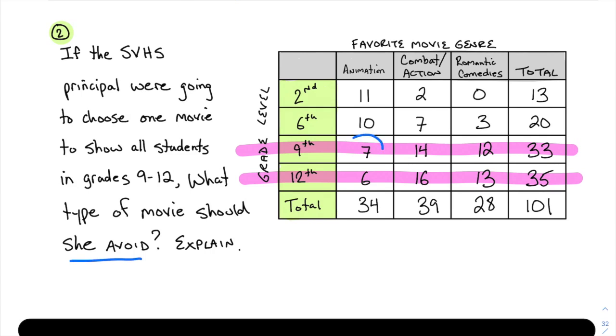What type of movie should she avoid? We want the least popular. Here's what I observe: 9 plus 7 equals 13 people who liked animation. 30 people liked combat or action movies. 25 people liked romantic comedies. If those are my three choices, combat and action were the favorites, romantic comedies were second favorite, and the least likely to be enjoyed is animation with only 13 students out of 101.